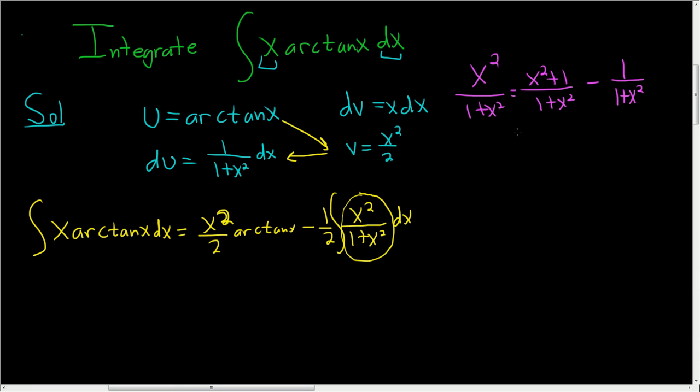Super powerful strategy, right? 1 minus 1 is 0. We really haven't done anything. This is 1 minus 1 over 1 plus x squared.